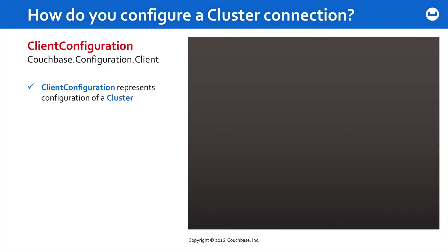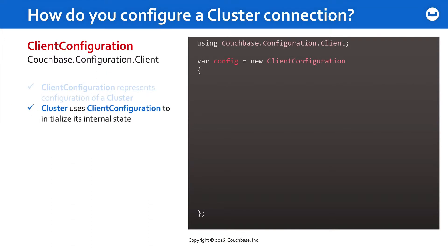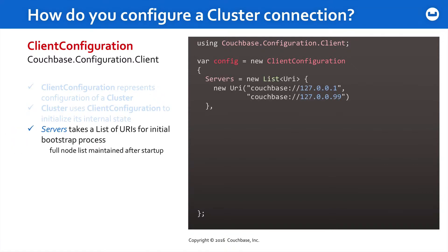So how do you configure a cluster connection for Couchbase? It's all based around the ClientConfiguration class. The ClientConfiguration represents the configuration state for a given cluster, and the cluster uses this object to initialize its internal state. We're going to use inline property declarations for easy-to-read configuration code. We create a new config object from ClientConfiguration, and the Servers property takes a list of URIs — these are just the bootstrapping URIs for high availability. Once the connection is made, the complete list of available nodes in the cluster will be available to the client and managed automatically in the backend.